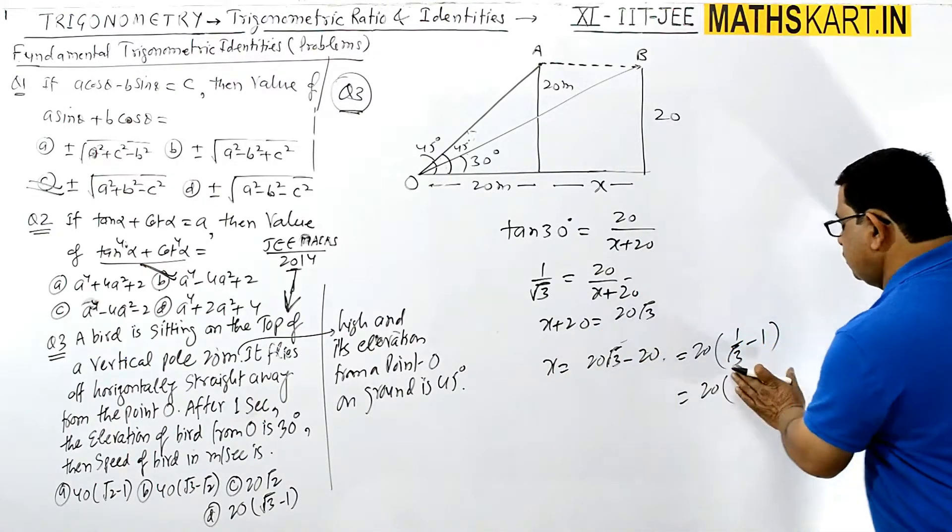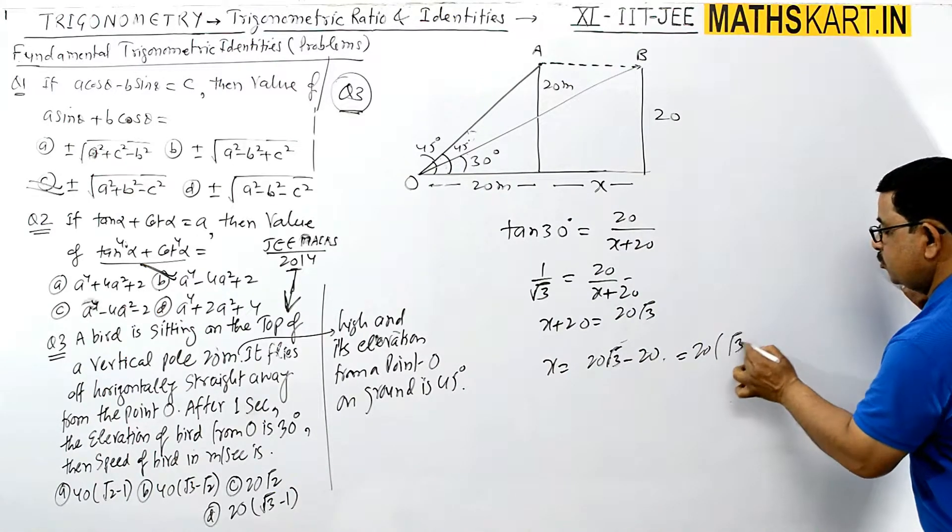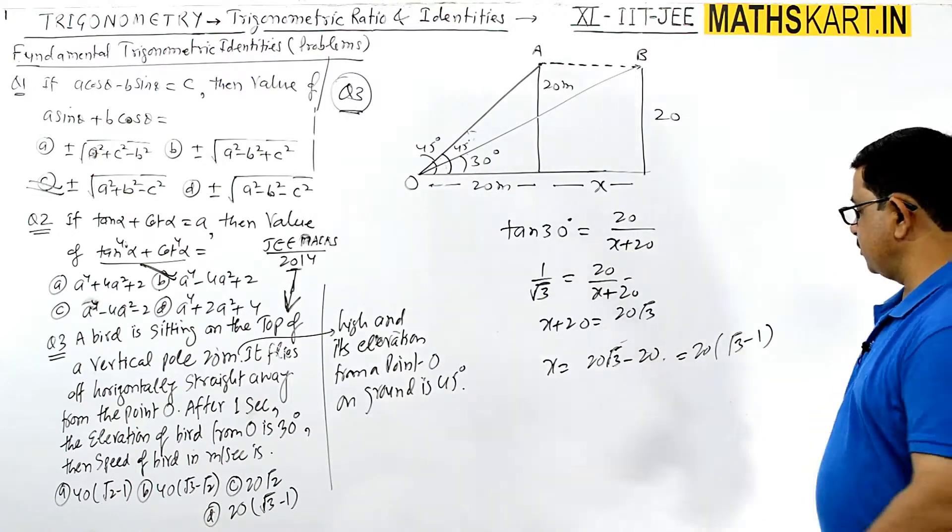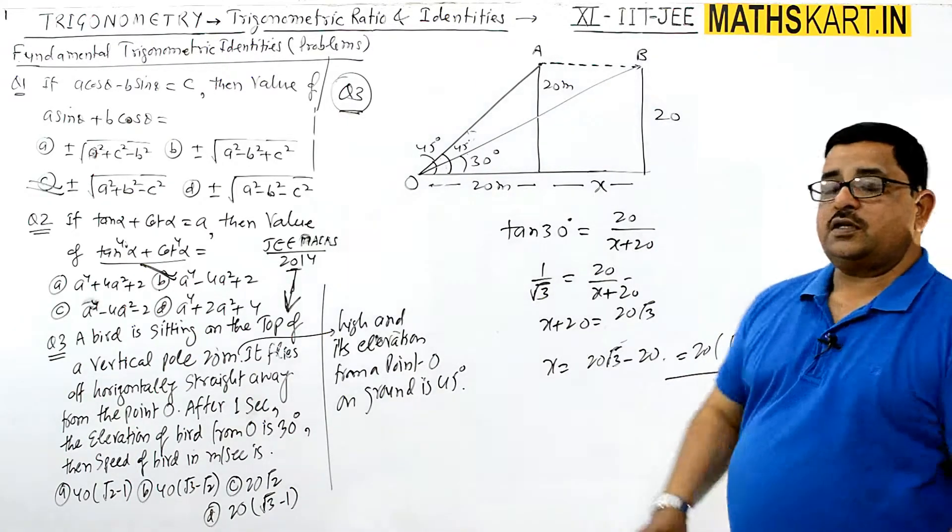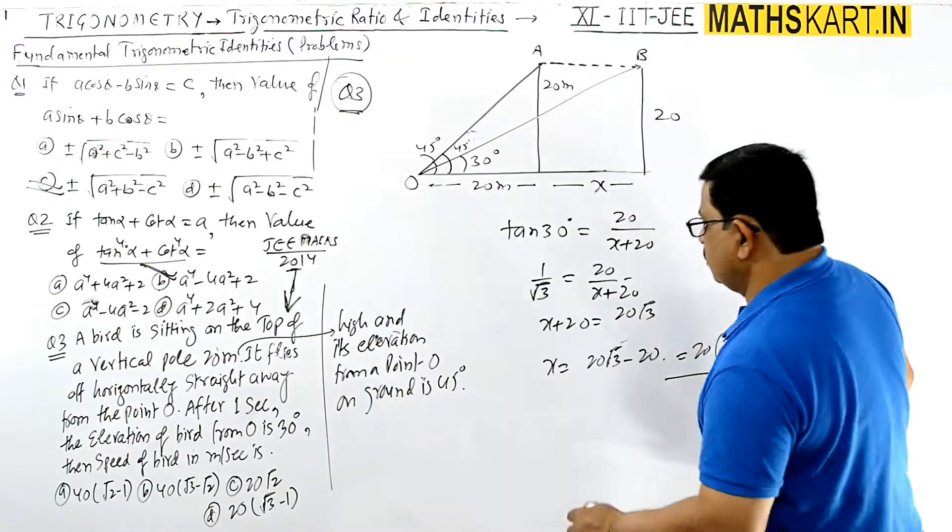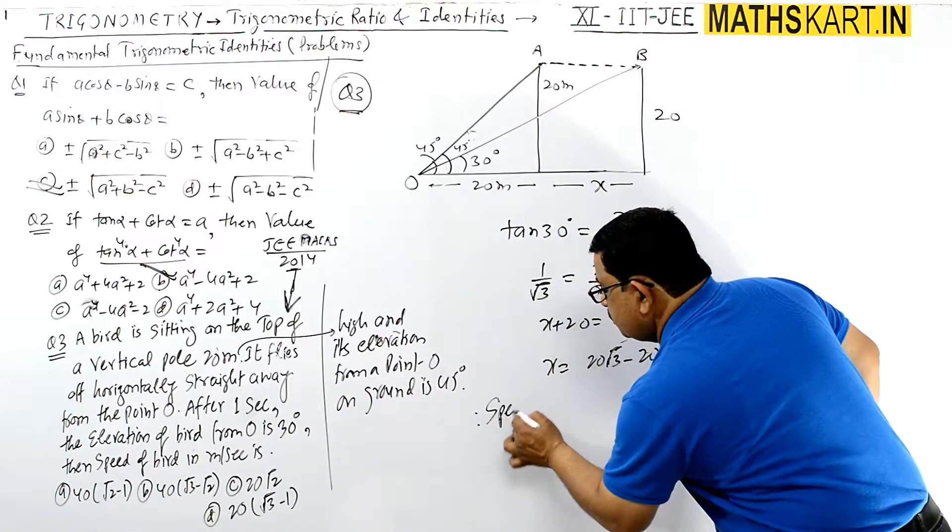Toh ye root 3 tak uppar aa gaya hai. This is root 3 minus 1. So 20 is common, root 3 minus 1. So this distance is traveled in 1 second. This is the speed. So therefore, speed equals 20(root 3 minus 1) meter per second.